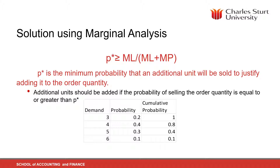So what we've got is P star. P star is the minimum probability that an additional unit will be sold to justify adding it to the order quantity. We should add additional units if the probability of selling the order is equal to or greater than P star.